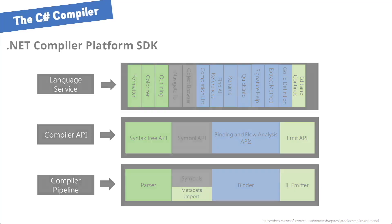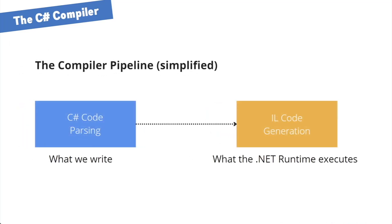For C# application development, we don't need to understand the whole compiler pipeline. The compiler parses the C# code we write, optimizes it, and generates IL code. IL stands for Intermediate Language. It doesn't matter if you write your application in C# or Visual Basic .NET — your compiled application will be running on the .NET runtime, which executes IL code. That's why all .NET programming languages compile into this format.